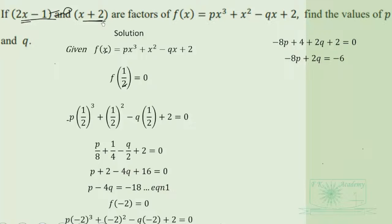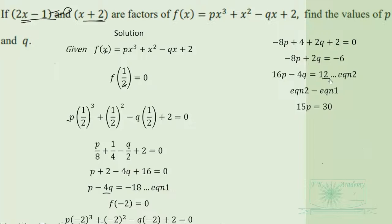Since there is 4q in equation 1, we multiply equation 2 through by negative 2 to get 16p minus 4q equals 12. We then subtract equation 1 from equation 2 to eliminate q. We get 15p equals 30, so p equals 2 when we divide through by 15.